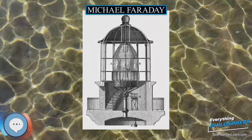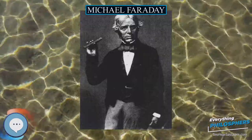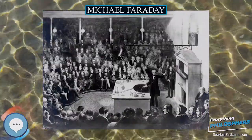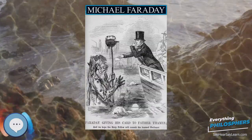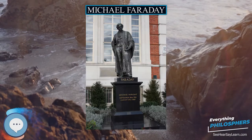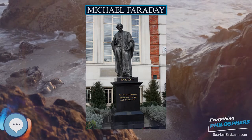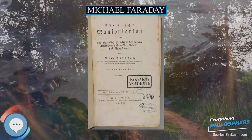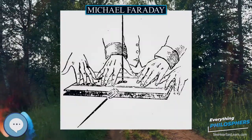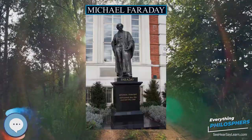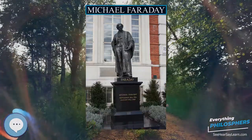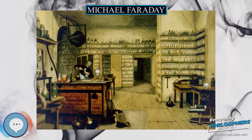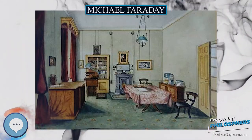In his lectures he urged his audiences to consider the mechanics of his experiments: "You know very well that ice floats upon water. Why does the ice float? Think of that, and philosophize." His subjects consisted of chemistry and electricity, and included: 1841 The Rudiments of Chemistry; 1843 First Principles of Electricity; 1848 The Chemical History of a Candle; 1851 Attractive Forces; 1853 Voltaic Electricity; 1854 The Chemistry of Combustion; 1855 The Distinctive Properties of the Common Metals; 1857 Static Electricity; 1858 The Metallic Properties; 1859 The Various Forces of Matter and their Relations to Each Other.